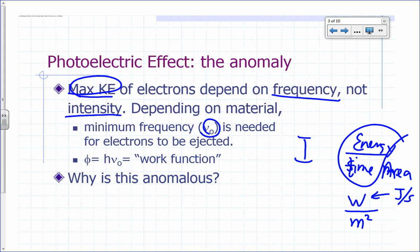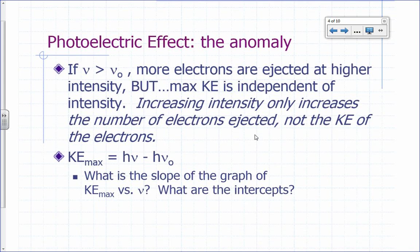h times nu-naught is called the work function. What makes this anomalous is that instead of the kinetic energy of the electrons depending on intensity, it depends on the frequency. The higher the frequency, the higher the kinetic energy of the electrons. If the frequency is higher than the threshold frequency, you simply get more electrons ejected at higher intensity, but the kinetic energy does not depend on intensity. What intensity does is give you more electrons, increasing the current, but it does not affect the kinetic energy.